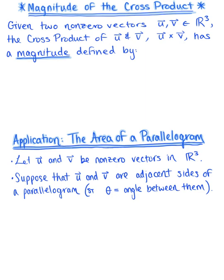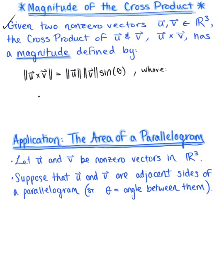Let's begin by exploring the definition of the magnitude. So given two non-zero vectors, vector u and vector v, in space, the cross product of vector u and v has a magnitude defined as follows. The magnitude of the cross product of vector u and vector v is equal to the magnitude of vector u multiplied by the magnitude of vector v multiplied by sine of theta, where theta is the angle between vector u and vector v.